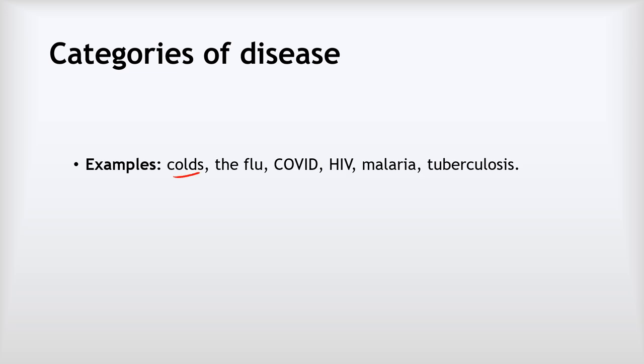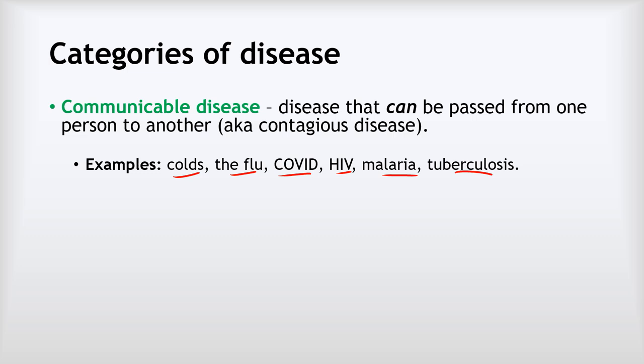On this slide, we're going to look at the different categories of disease. Our first category includes things like colds, the flu, COVID, HIV, malaria, and tuberculosis. What these have all got in common is that they can be passed from one person to another — diseases that can be passed on are referred to as communicable diseases. Communicable just means they can be communicated, passed on from one person to another. We sometimes use the word contagious to describe diseases like that.